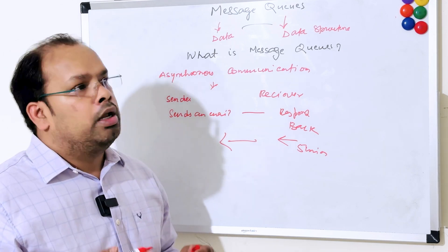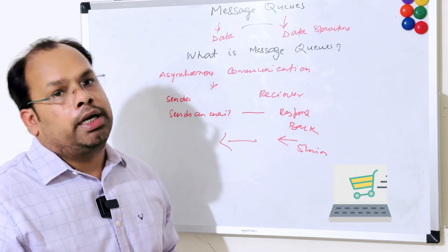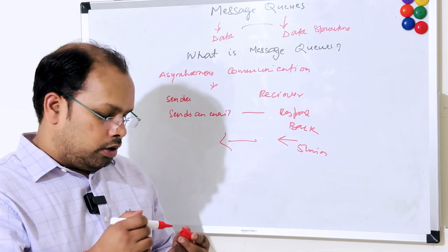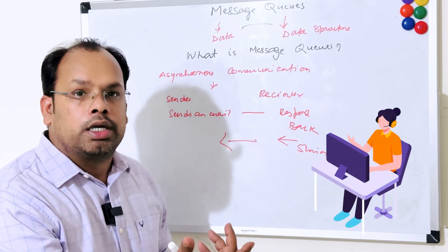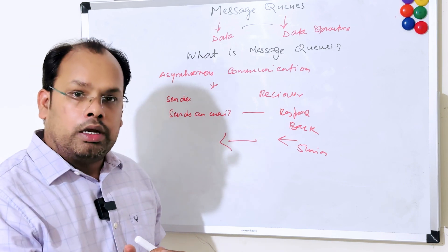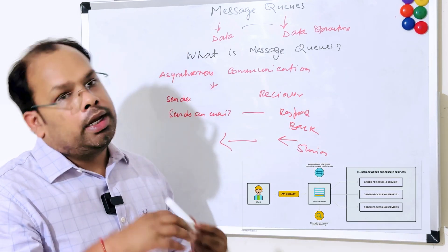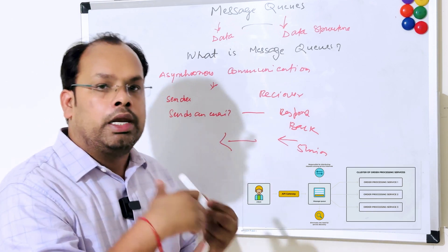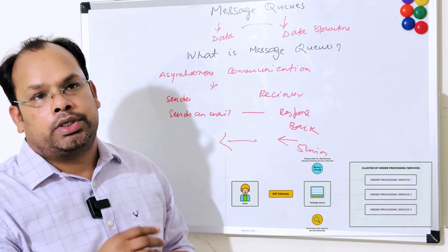In the real world, let's say there is an e-commerce website like Flipkart or Amazon. Customers place orders, and at the time of the order we do order processing and send an email and an SMS — that can be possible via message queues.